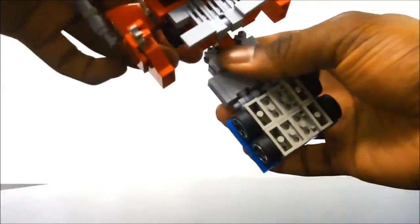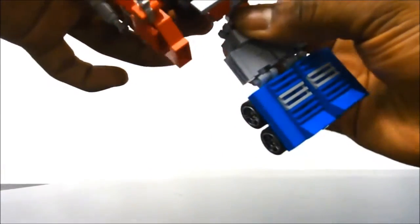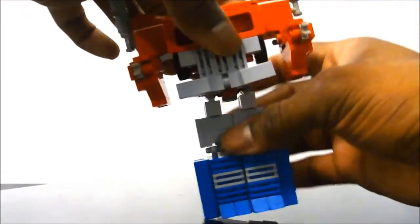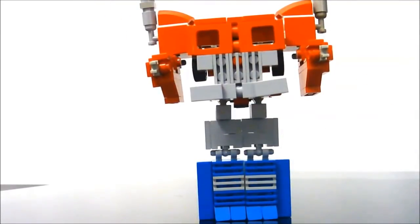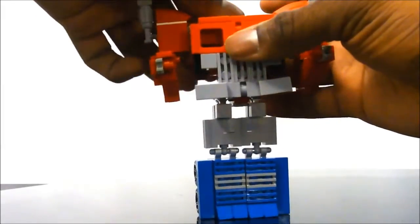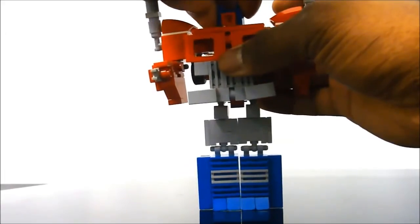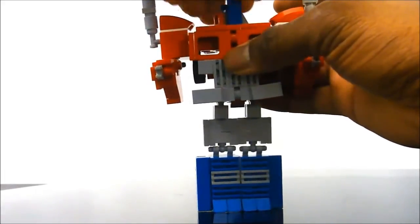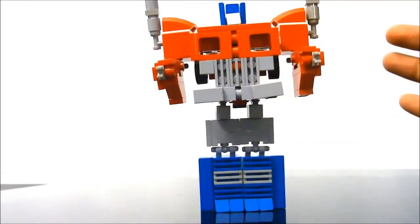And then we're going to rotate his waist 180 degrees. See him beginning to take shape right there. Then we're going to take his head, flip it up, and rotate his head at the neck 180 degrees. Bam!